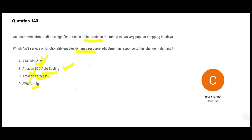If you want to know who changed that configuration, AWS Config is the place that helps you understand the history behind changing configurations and operating systems. But the question is not asking for an audit — it is asking for dynamic adjustment of resources. So auto scaling is the only option that resonates with this requirement.